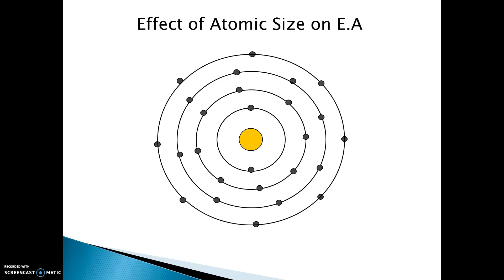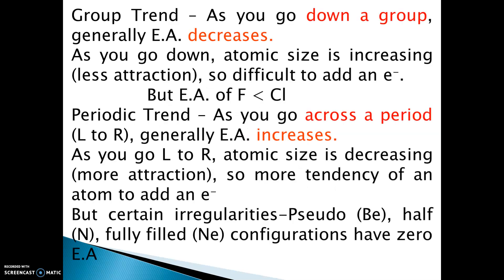For bromine, the incoming electron again feels less attraction towards the nucleus. This is due to the reason that when we move in a group from top to bottom, generally electron affinity decreases. But there are some anomalous behaviors and irregularities when moving in a group.